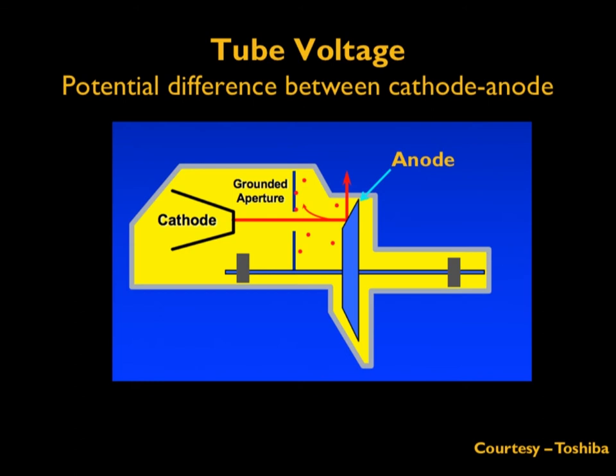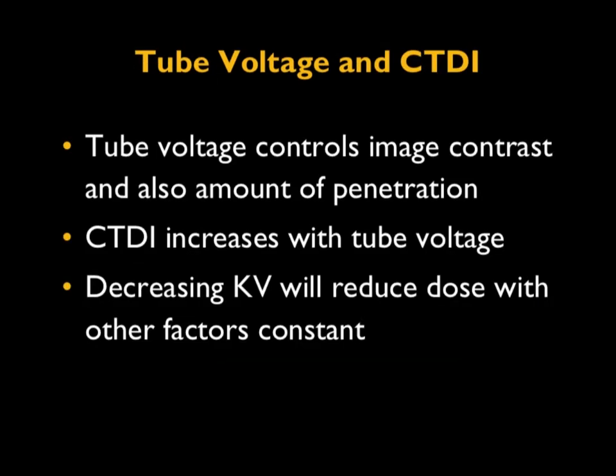The potential difference defines the quality of the X-rays produced. The most common CT applications use 120 kV because the energy of X-rays produced by a 120 kV potential difference is suitable to penetrate even thick portions of the body. However, for thin patients and infants, 80 kV is being routinely used. The lower tube voltage decreases the radiation dose to the patient.